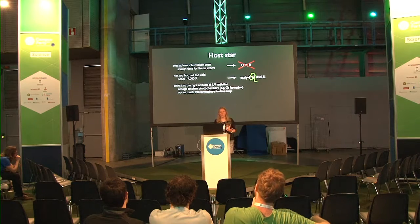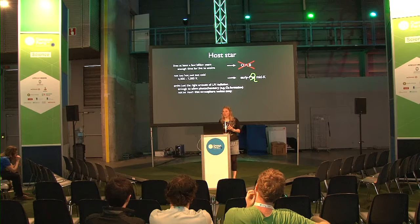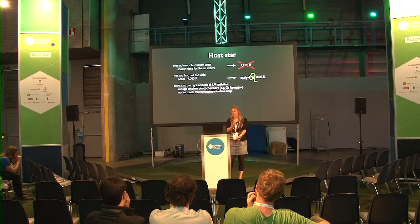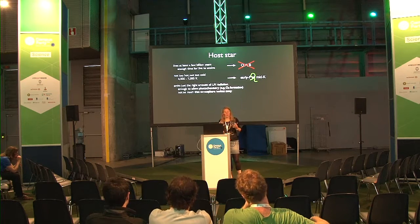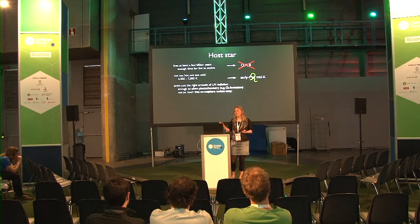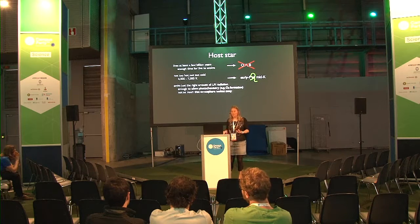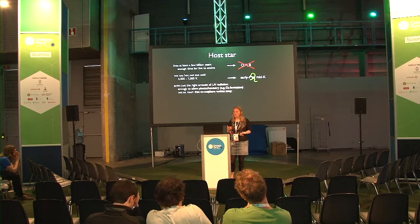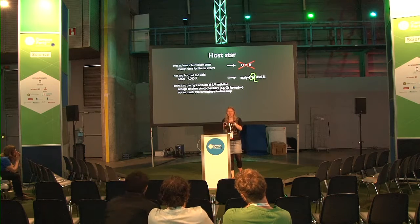You want your star to emit just the right amount of UV radiation. UV radiation is on one hand very toxic — it causes our sunburns and skin cancer. But you do need UV radiation because it gives you some photochemistry that helps create ozone in our atmosphere. Ozone then protects you from UV. So you need some photochemistry going on in your atmosphere to get protective layers. But if you have too much UV radiation, it starts reacting with atmospheric species and reacts away your atmosphere.